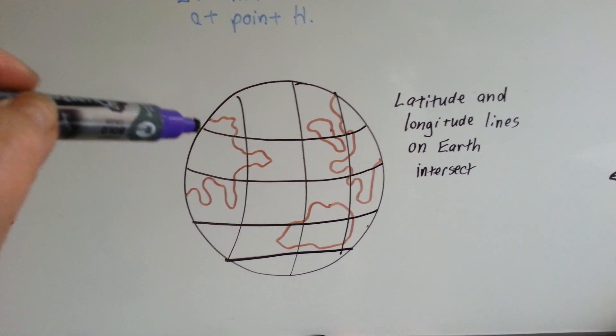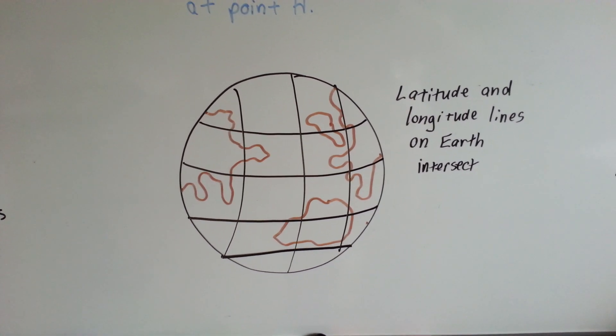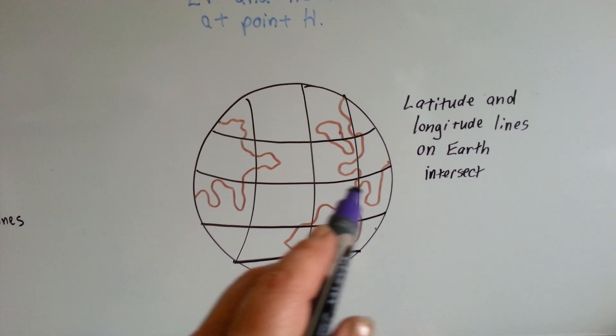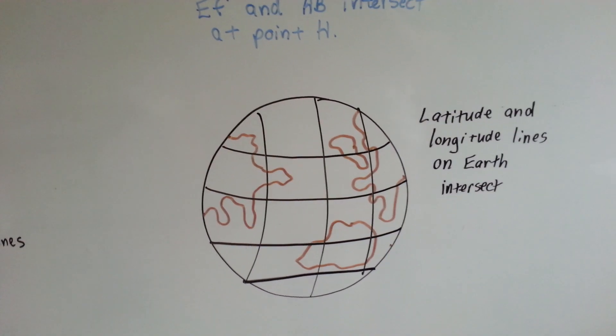because latitude and longitude lines on the Earth intersect each other. See? They would intersect with the equator, wouldn't they?